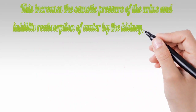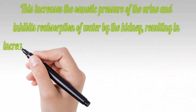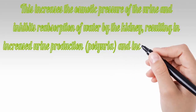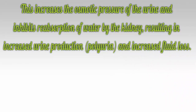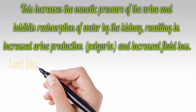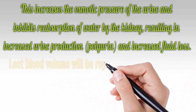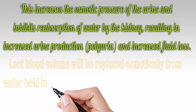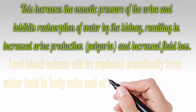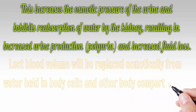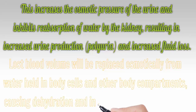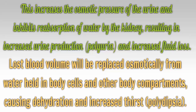Inhibited water reabsorption results in increased urine production — polyuria — and increased fluid loss. Lost blood volume will be replaced osmotically from water held in body cells and other body compartments, causing dehydration and increased thirst — polydipsia.